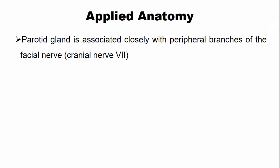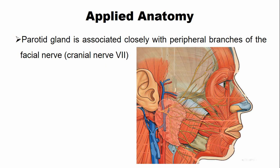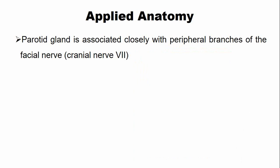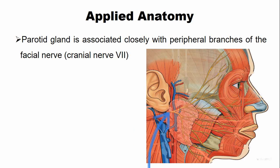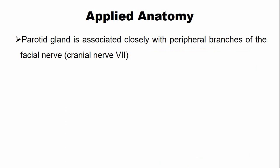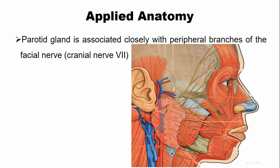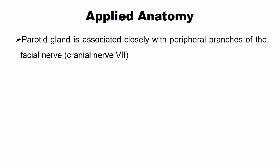The parotid gland is associated with the peripheral branches of the facial nerve. The facial nerve exits through the stylomastoid foramen and enters the parotid gland, as you can see in this picture. It gives five branches that exit through the anterior and lower border of the parotid gland. These branches are temporal, zygomatic, buccal, marginal mandibular, and cervical, and they supply the muscles of the face.